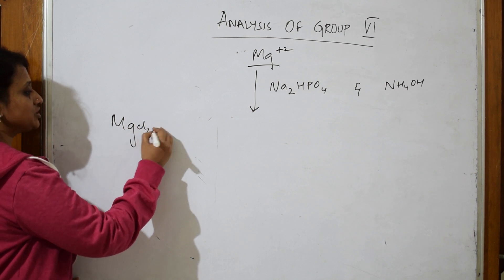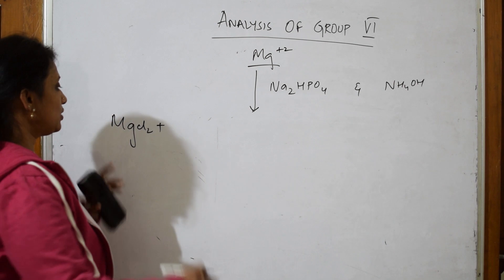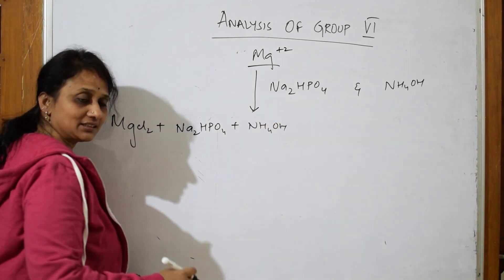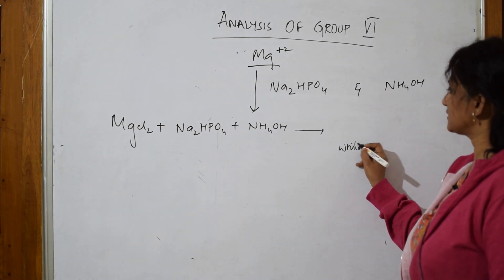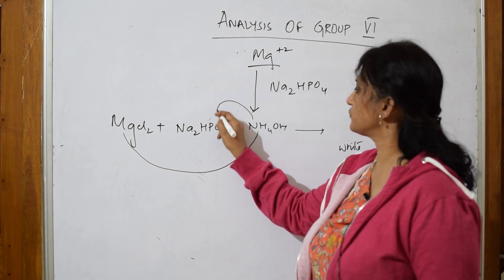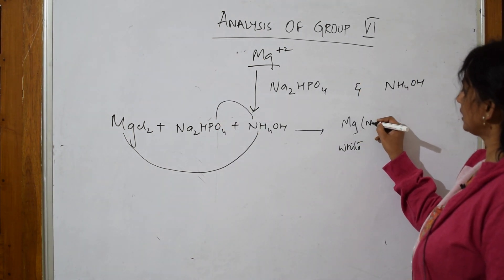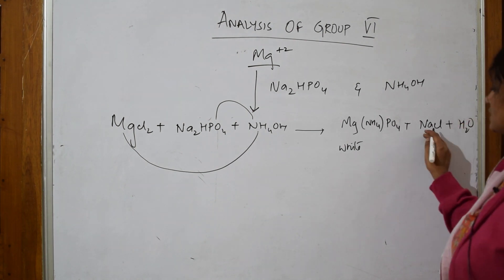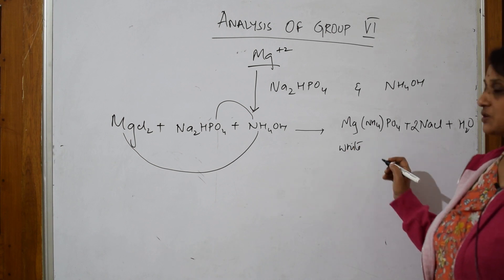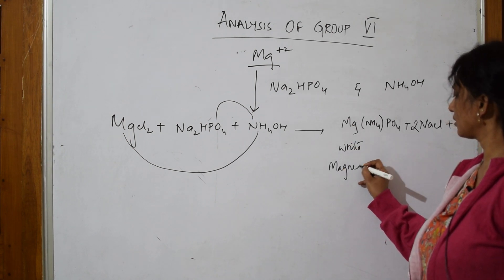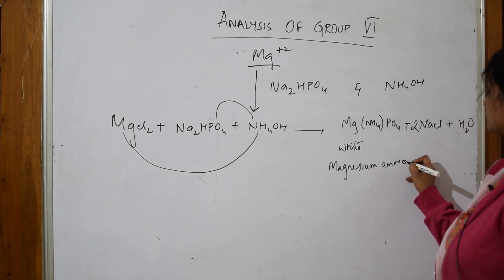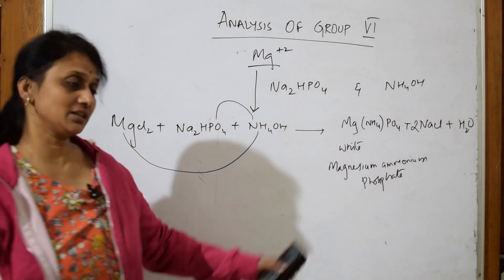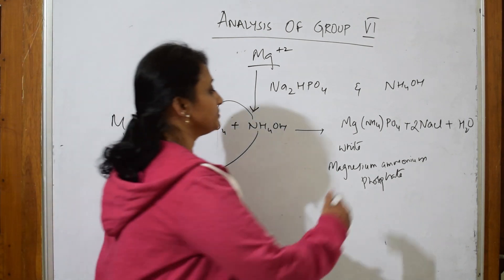Testing for magnesium: if the salt contains magnesium chloride, add sodium hydrogen phosphate and ammonium hydroxide — you get a white precipitate. That white precipitate is magnesium ammonium phosphate (MgNH₄PO₄). The byproduct is NaCl and water. The white precipitate of magnesium ammonium phosphate confirms the presence of magnesium. This is the answer to the examiner's 'why' question.